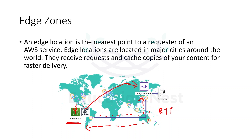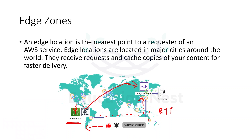Now when the customer requests that video, the request will go directly to the Edge Location in Japan. It will check whether that video is there — if it is, it will return the result directly to the customer. This drastically reduces the round trip time and network latency. So Edge Locations are basically used for caching copies of our data, and are used mostly for CDNs — that is, content delivery networks.